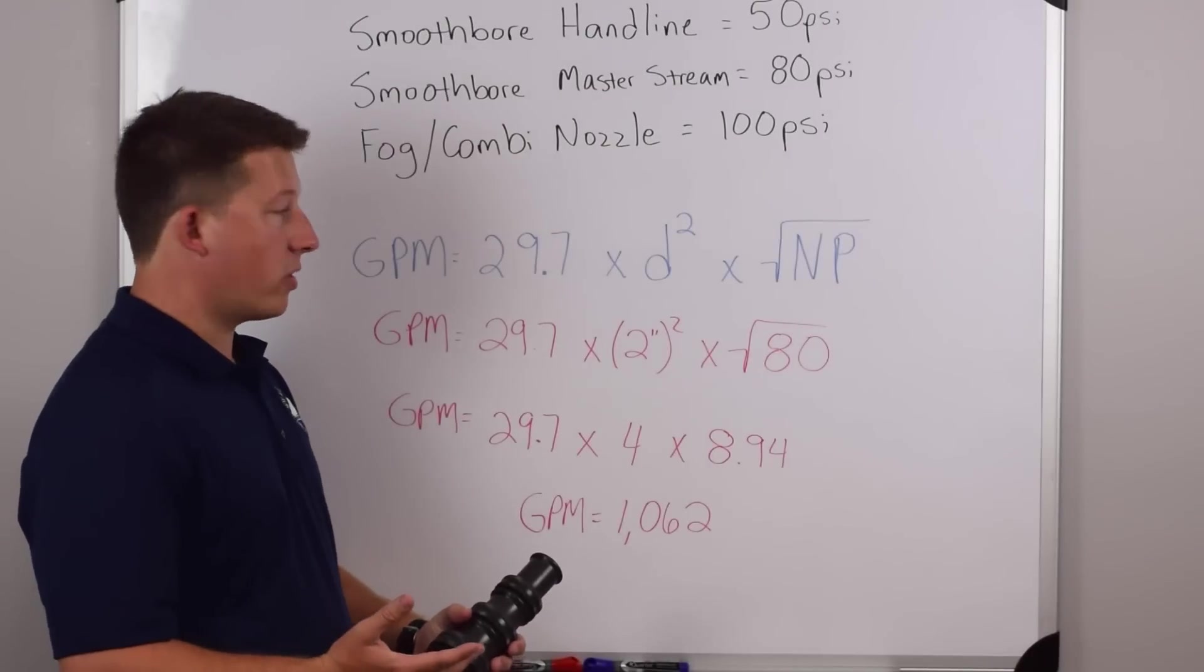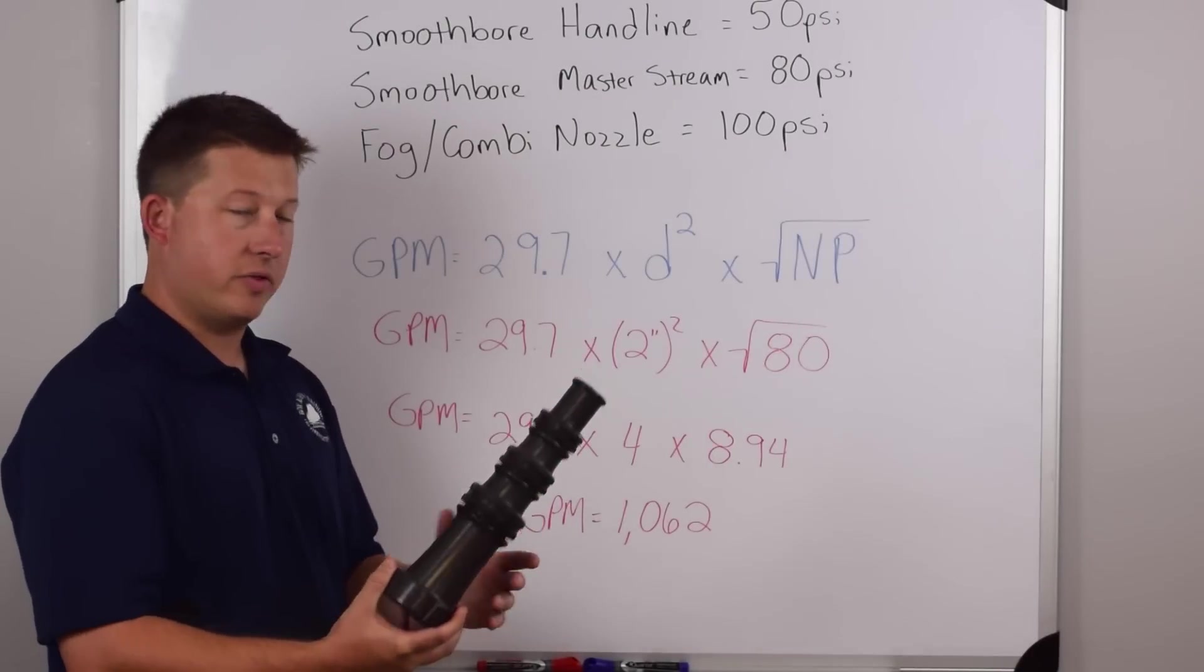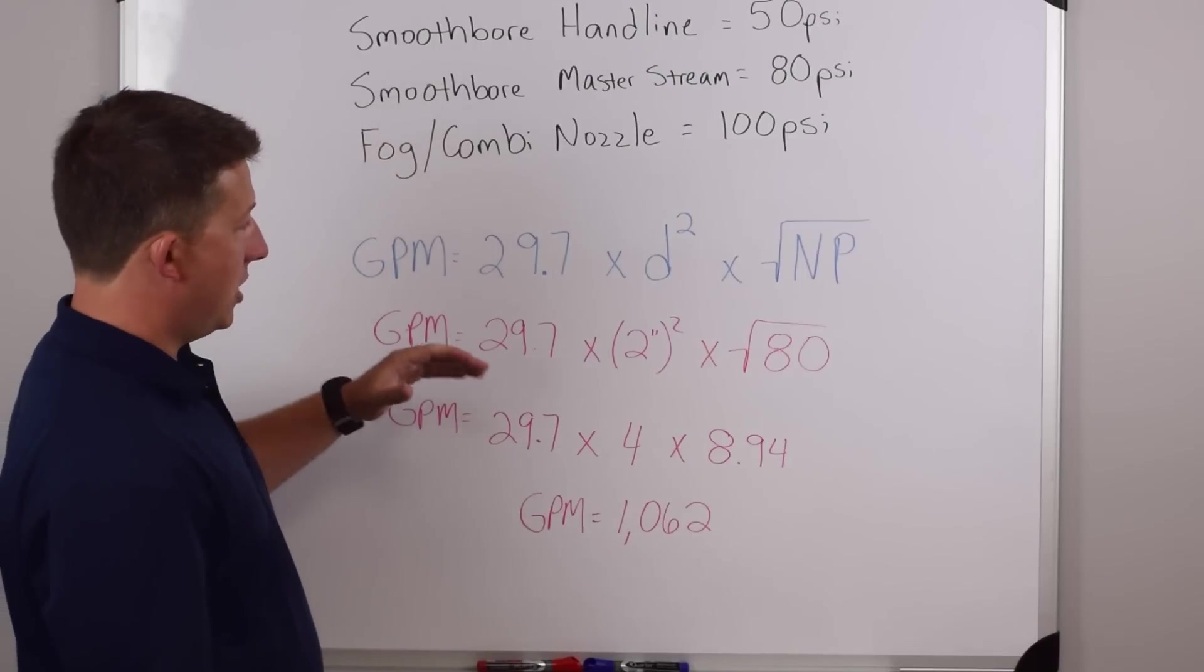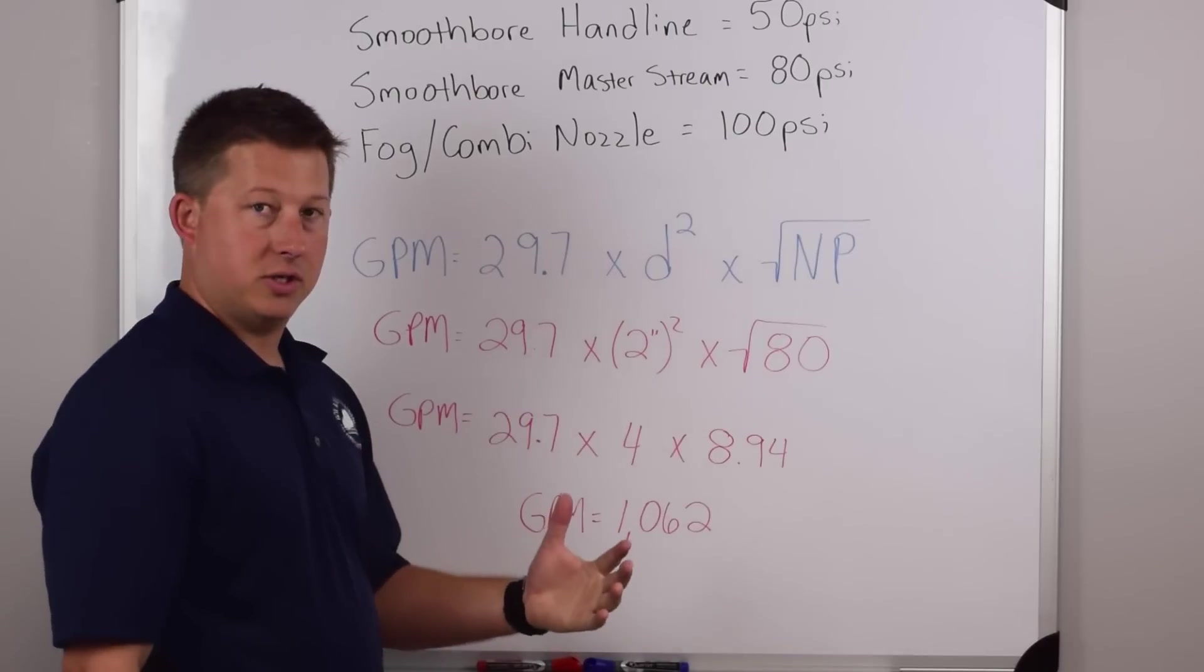In the next example, we're going to use a smoothbore master stream nozzle, something like the different tip sizes that you can use on a master stream. So now we're looking at changing a couple of things. We're changing the diameter to a two inch tip.